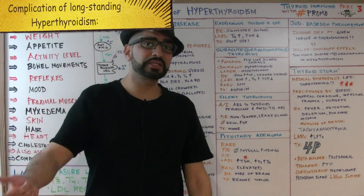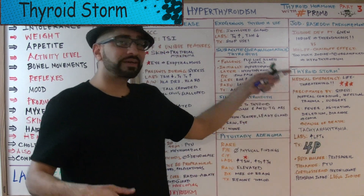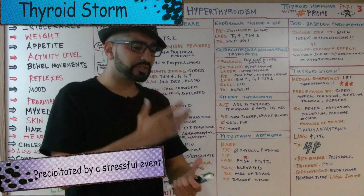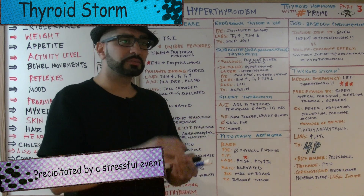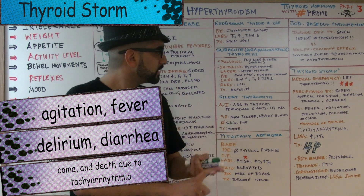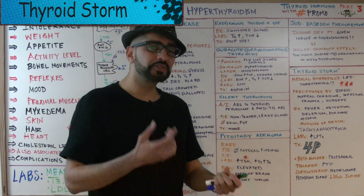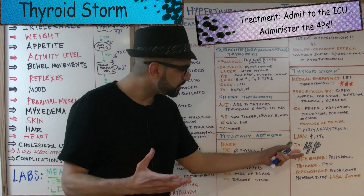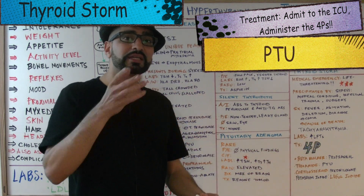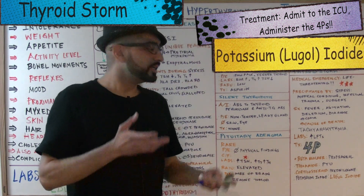A complication of long-standing hyperthyroidism is thyroid storm — a life-threatening medical emergency. It is precipitated by stressful conditions such as surgery, infection, heart attack, congestive heart failure, or trauma. The patient presents severely agitated, with fever, delirium, diarrhea, and can progress to coma. The most common cause of death is tachyarrhythmia. Labs show increased LFTs. Treatment uses the four P's: Propranolol (beta blocker for symptoms), PTU (inhibits 5'-deiodinase and thyroid peroxidase), corticosteroids such as prednisolone, and Lugol's iodide (potassium iodide).